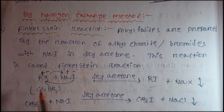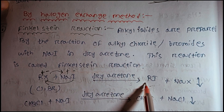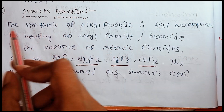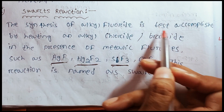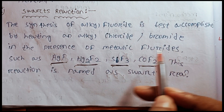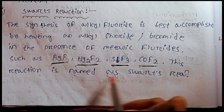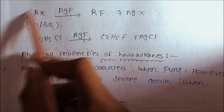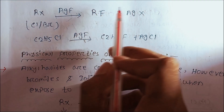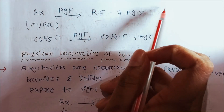The Finkelstein reaction is the same as the alkyl halide sodium iodide reaction in dry acetone to give alkyl iodide. The synthesis of alkyl fluoride is best accomplished by heating an alkyl chloride or bromide in the presence of metallic fluoride such as HgF2, Hg2F2, SbF3, or CF2. This reaction is named the Swartz reaction. The alkyl halide plus metallic fluoride reaction gives alkyl fluoride.